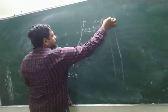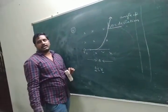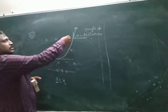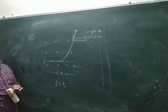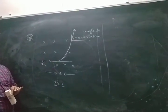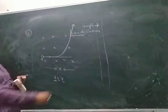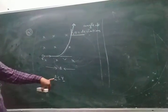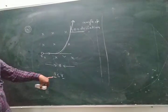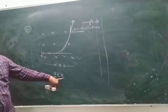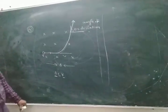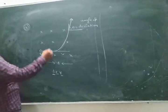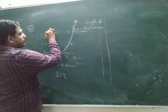Once again: what is the angle of deviation? The angle between the initial direction and the final direction — this is called the angle of deviation. In the situation where the width of the magnetic field region is less than r, I discuss this with a diagram.